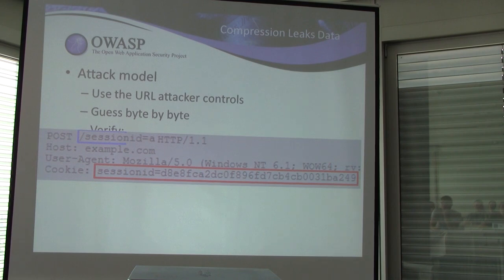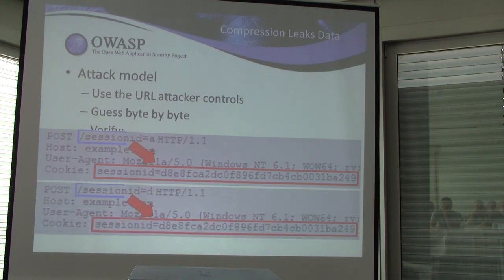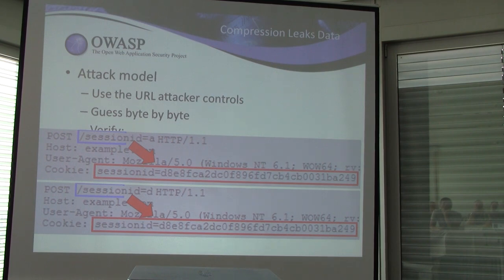For example, the attacker tries: session_id=A, then B, then C, and so forth. When session_id=D is a repeating string within the cookie, the payload will be compressed more successfully, resulting in a shorter payload over the network that the attacker can observe. The attacker will then know D was the correct guess and move on to guess the next character until the whole cookie is revealed.